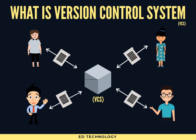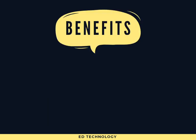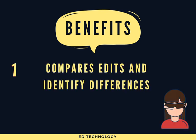In the software world, different version control systems are available in the market — we'll discuss those in further videos. Now, what are the benefits? The first benefit is it compares the edits and differences. Version control system allows you to compare files, identify the differences, and if required, merge the changes prior to committing the code. It is a great way to keep track of the application.